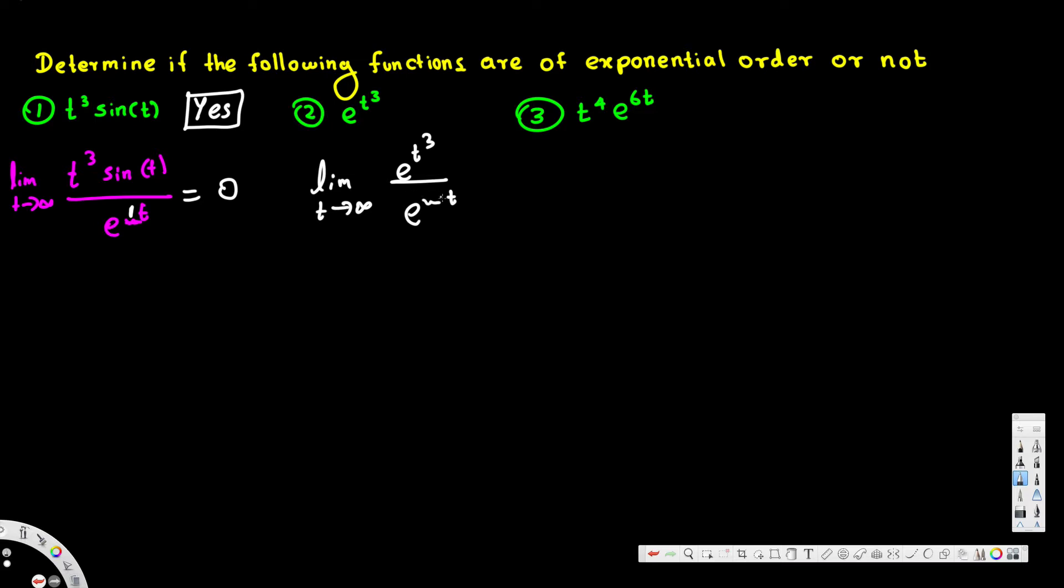linear function. No matter what, even if you put 1000, when you multiply by infinity, this t cubed is going to be much larger than this one. So no matter what number you put, it's never going to be zero.